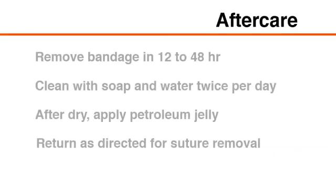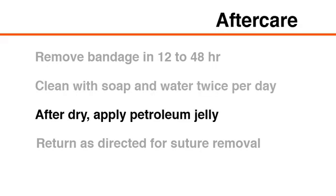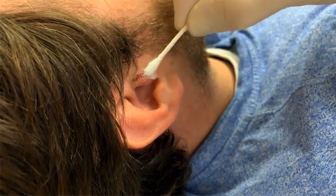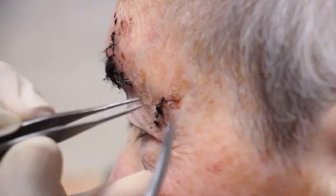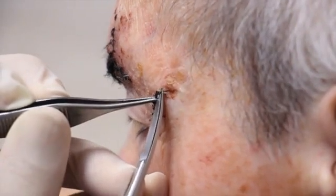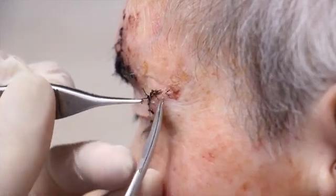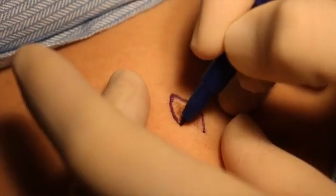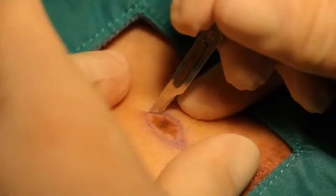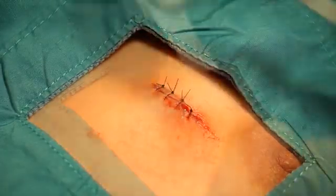If a bandage or dressing has been applied, it can be removed 12 to 48 hours after the procedure; at this point, the biopsy site can be cleaned with soap and water twice a day. After drying, petroleum jelly can be reapplied to promote a moist healing environment. The timing of suture removal depends on the location of the biopsy and the amount of tension in the closure. In highly vascularized areas with rapid epithelialization, early suture removal is advised to prevent train tracking of the skin. Sutures on the face are generally removed after 5 to 7 days, sutures on the back and legs after 14 to 21 days, and sutures elsewhere after 7 to 10 days. Excisional biopsy is a commonly used technique for the diagnosis or treatment of skin lesions; with a basic understanding of regional anatomy and careful technique, the procedure can be carried out safely and efficiently, and appropriate aftercare can help ensure a favorable cosmetic outcome.